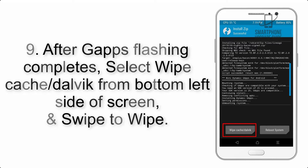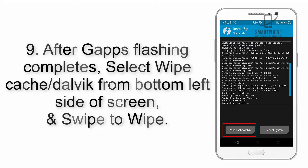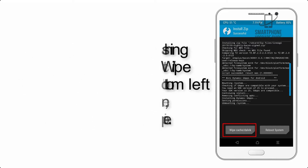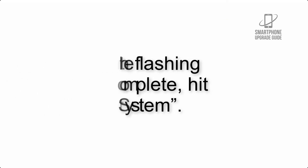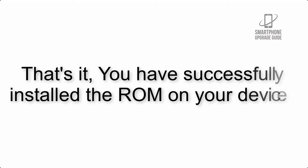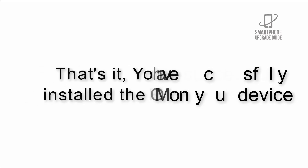Step 9: After GApps flashing completes, select Wipe Cache and Dalvik from the bottom left side of the screen and swipe to wipe. Step 10: When the flashing process is complete, hit Reboot System. That's it — you have successfully installed the ROM on your device.